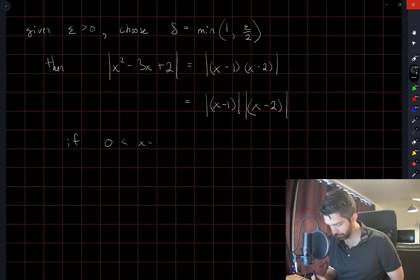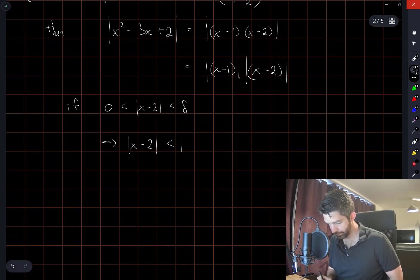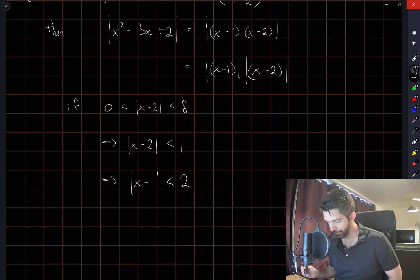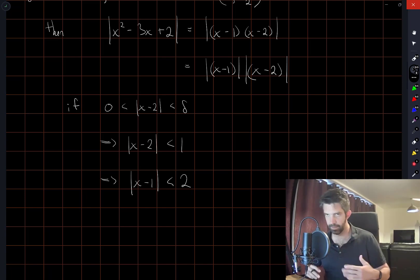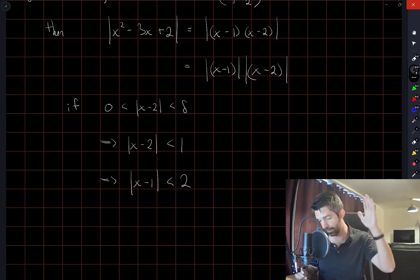Now, if x minus 2 is less than delta, this in particular implies that x minus 2 is less than 1. And this implies that x minus 1 is less than 2. The easiest way to see this is by drawing that number line that I had above.